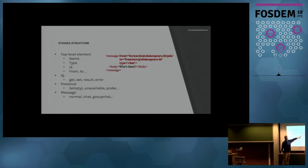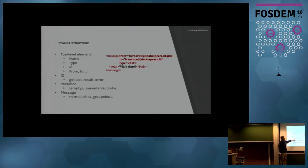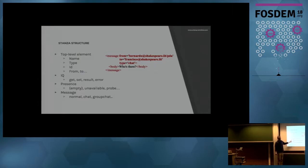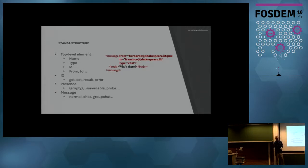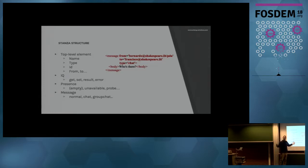There are a few predefined types which are non-modifiable. For IQ: get, set, result, or error — if you set some parameters you send a set stanza and get result or error; if you get, you receive a result like messages from an archive. For presence, it can be empty — empty presence means 'I'm available' — or unavailable, and so on. I could talk about XMPP till Thursday, so we're just going to skim along the surface. Messages have types: normal is a one-to-one message, chat is part of a longer conversation, and group chat is, well, group chat.